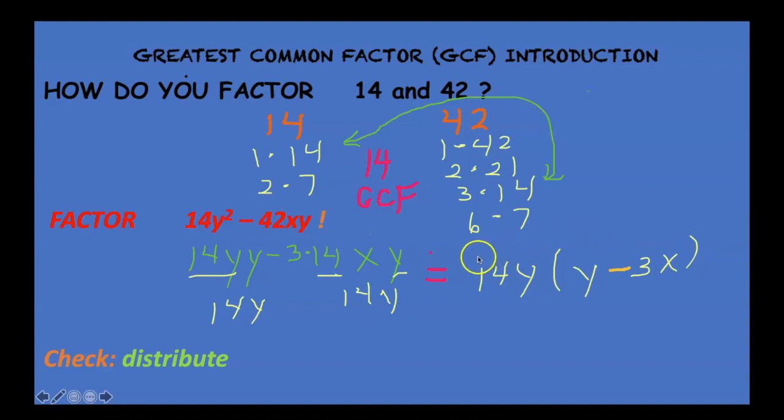But this is what it looks like with the greatest common factor taken out. Remember, factors are two numbers multiplied together. That's a times sign right there. So there's the check. Distribute out. This isn't the answer. This is the answer.